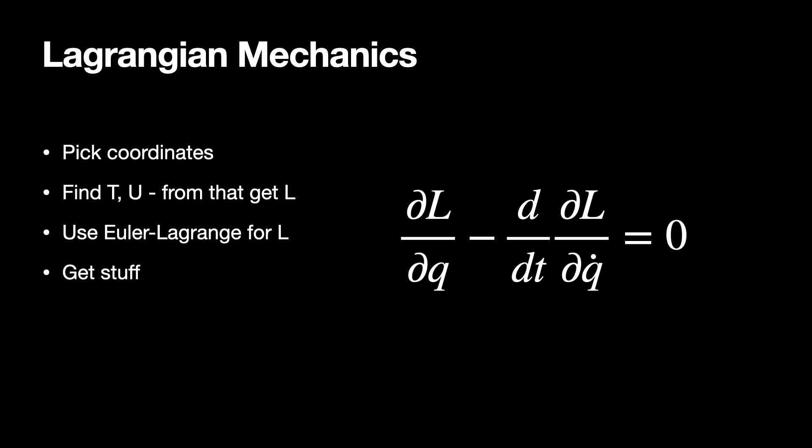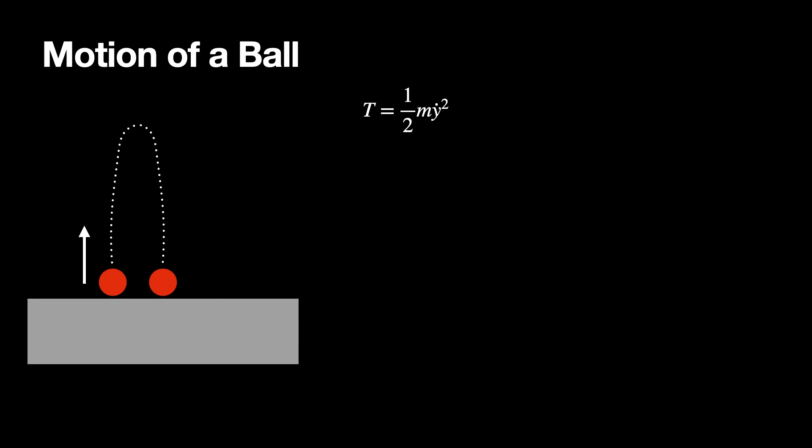I'm going to work through two simple problems. First, a ball thrown up in the air. The kinetic energy is one-half M times y-dot squared, and the potential energy is MgY. So the Lagrangian is T minus U: one-half M y-dot squared minus MgY. First, I take the partial of L with respect to Y — the kinetic energy doesn't depend on Y, so I just get negative Mg. Then I take the partial of L with respect to y-dot and get M y-dot.